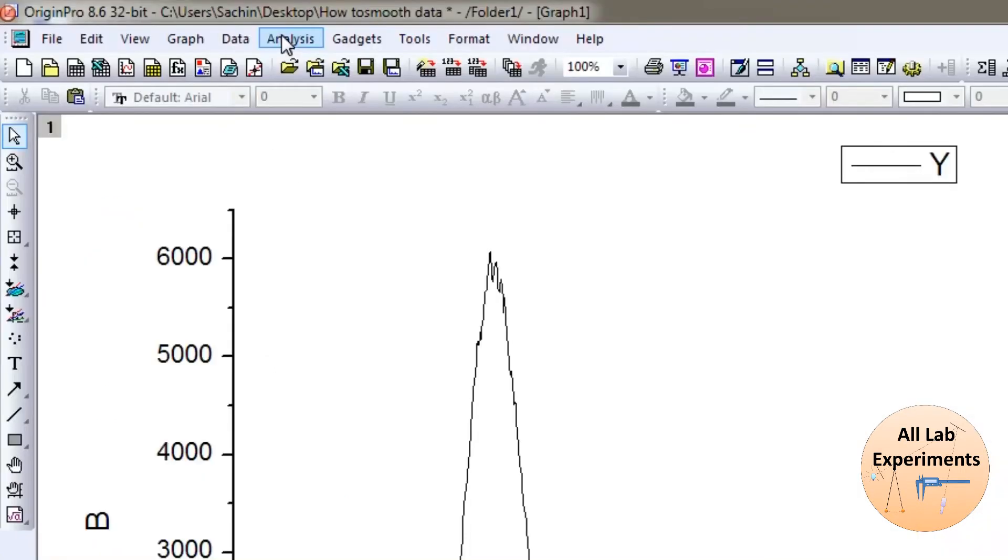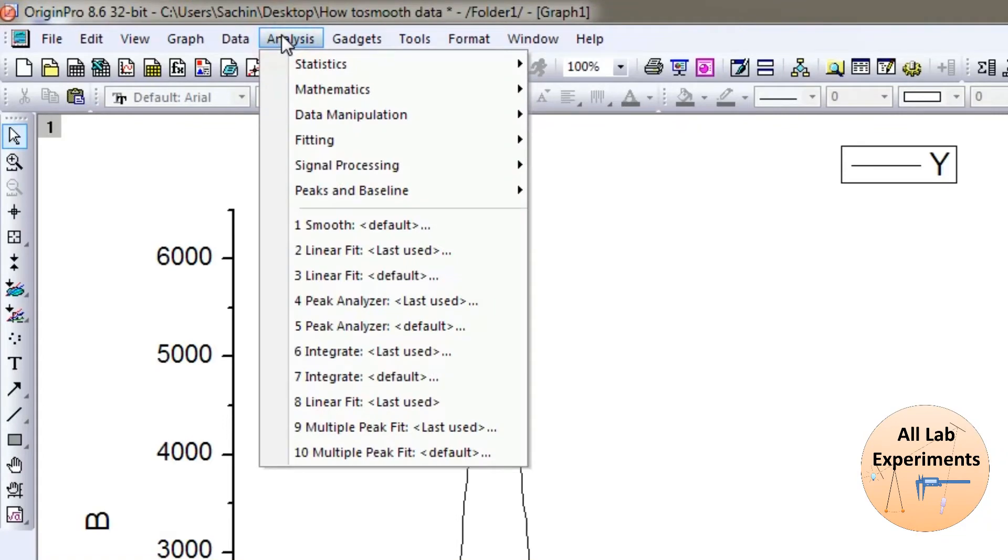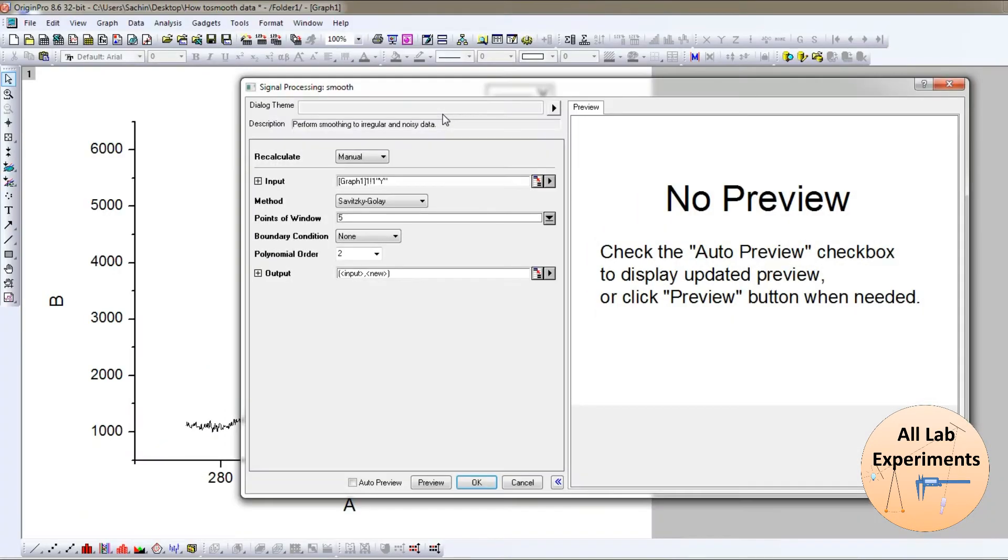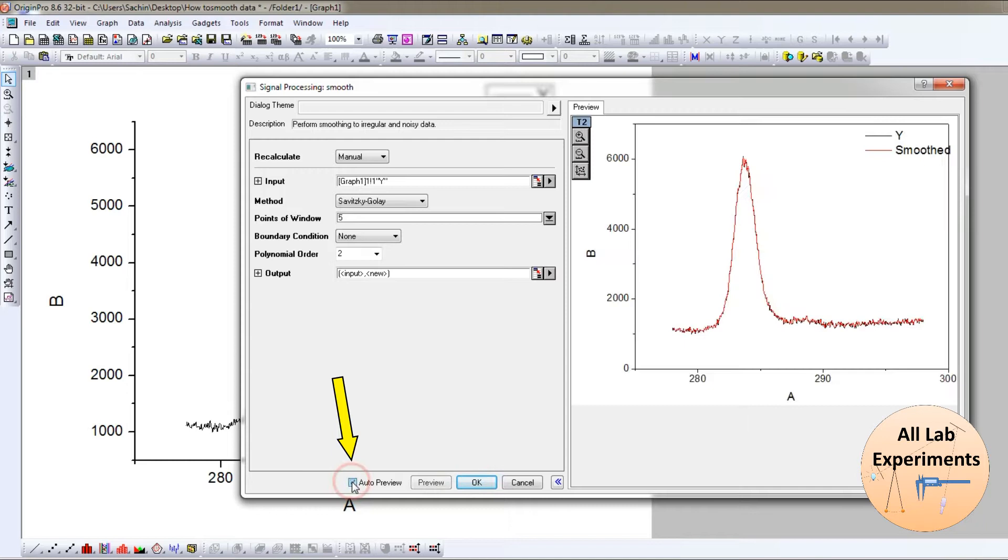Smoothing is just a five second job. To do this, first go to Analysis option, then go to Signal Processing, after that go to Smooth and then open the dialogue.